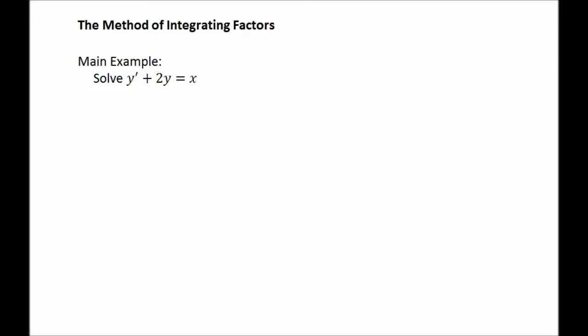Now we come to our first legitimate example of the method of integrating factors. This time we're going to find a general solution for the differential equation y prime plus 2y equals x. Notice that we're using x as the variable this time instead of t. What we need to do here is modify the differential equation so that it's ready for us to try to reverse the product rule — it's not ready yet. The left side is not what you would get from expanding the derivative of a product using the product rule.